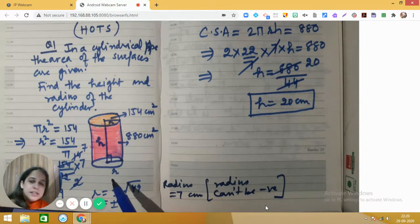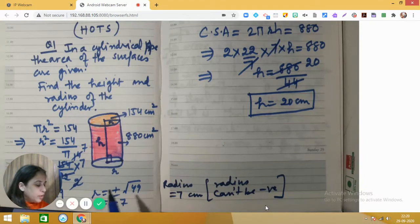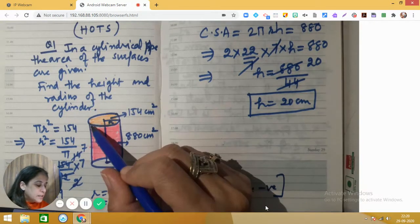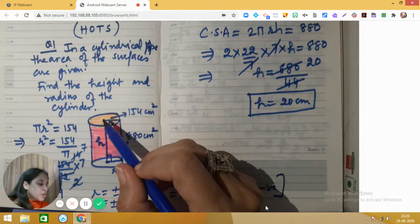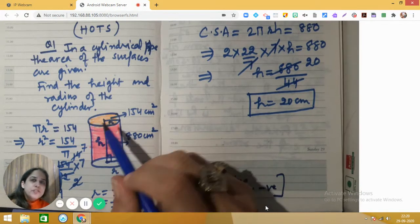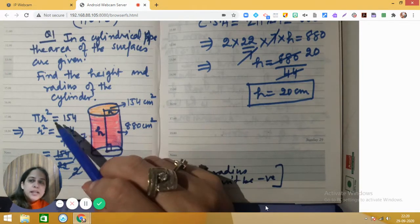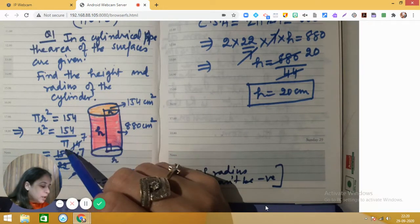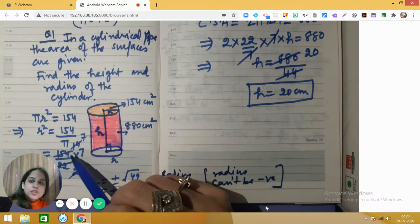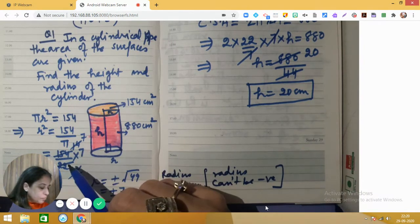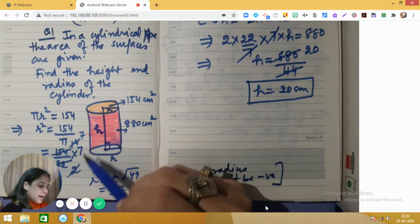In this question, what is the area of the top? The top is in the shape of a circle, so area of the circle we know is pi r square. So pi r square equals 154, so r square will be 154 upon pi. At the place of pi you can put the value 22 upon 7 and simplify.